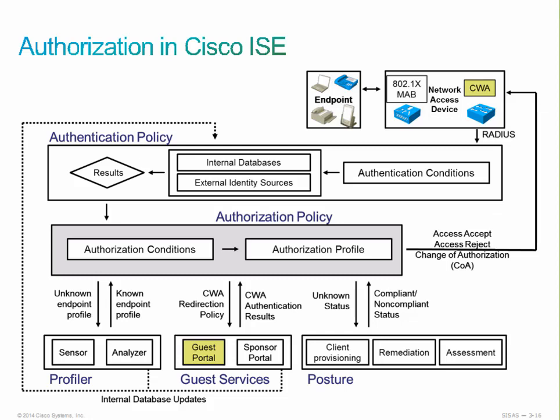Authorization policies are the second major component of ICE, providing network authorization services that allow administrators to define different authorization policies and configure authorization profiles for specific users or groups accessing specific network resources. Network authorization policies take rules with specific user and group identities to create an authorization profile, which grants permission and applies network access authorization based on that policy.